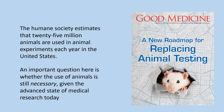The Humane Society estimates that 25 million animals are used in experiments each year in the United States. An important question is whether the use of animals is still necessary given the advanced state of medical research today. As with growing animals for food, a relevant ethical question is whether, with the resources we have today, we've outgrown these practices of animal research — or whether there are better, more humane ways of doing research that don't cause the same degree of suffering.